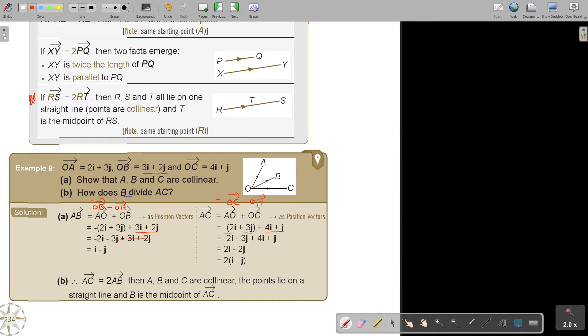So I see. Then they say, how does B divide AC? AC is 2 times AB. Then AB and C are collinear. The points lie on a straight line. And B is the midpoint of AC. That's what I proved there.